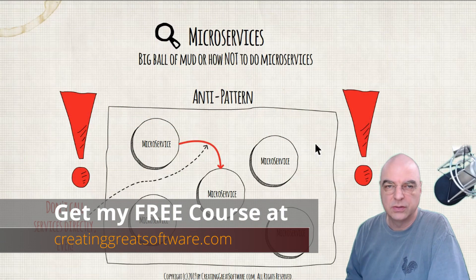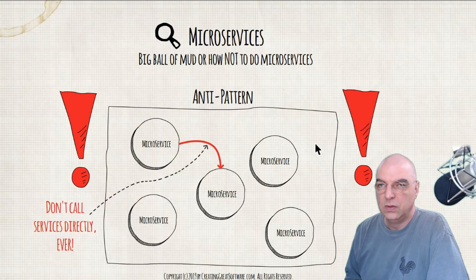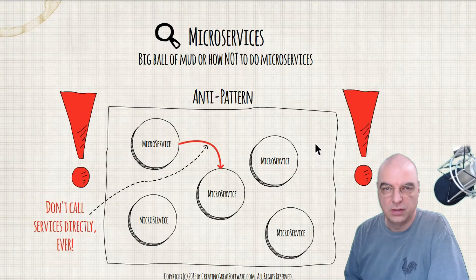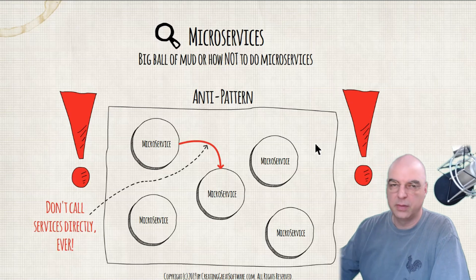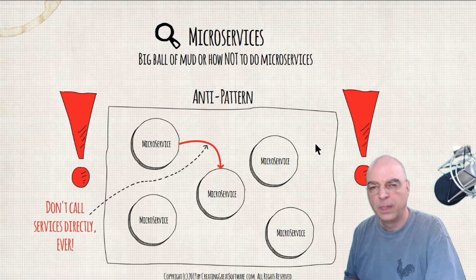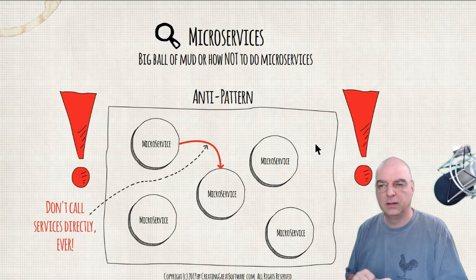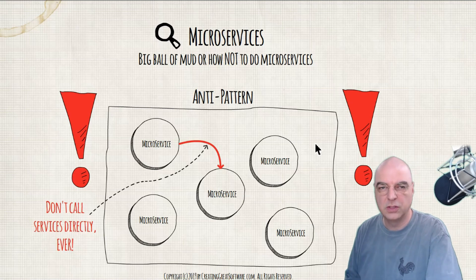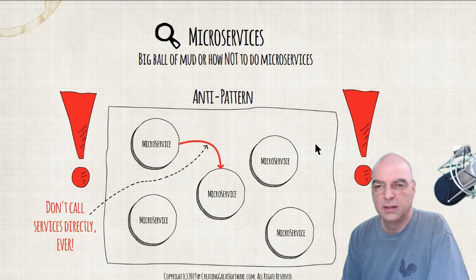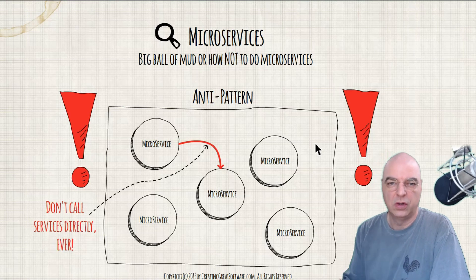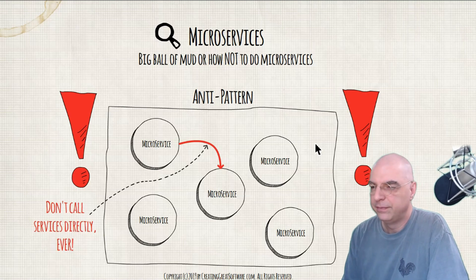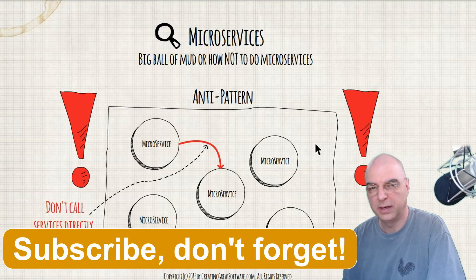As you compose these different microservices, you will get into the temptation from one microservice to call another microservice because you need a piece of information. You know this other microservice has that piece of information and you want to get access to it, so you call it directly — maybe through some kind of public API. However, don't do that. Never call a microservice directly, and we'll see later why that is.